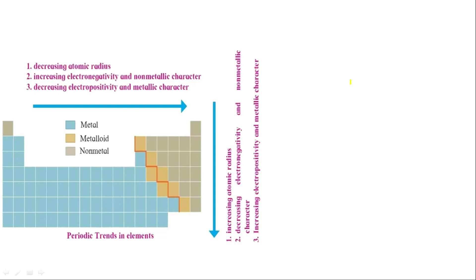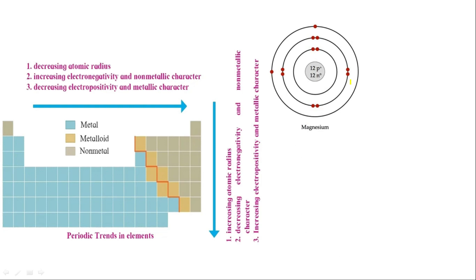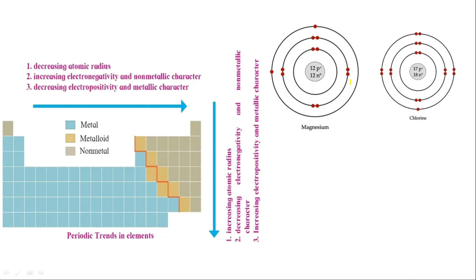Let's start the topic. For this I have taken two examples: the atom magnesium and its atomic structure, and on the side is chlorine. The position of magnesium is here in the periodic table and the position of chlorine is here. This is the same period — the third period — which means both should have three shells. Let's check: one, two, three — yes, there are three shells.